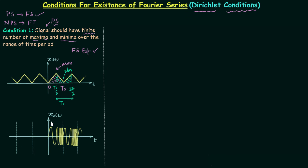Now for signal x2(t), the signal is periodic — the same structure is repeated after interval T0. But here you can see there are infinite maxima and infinite minima in one time period. So we don't have a finite number of maxima and minima, and therefore the Fourier series expansion for signal x2(t) will not exist.